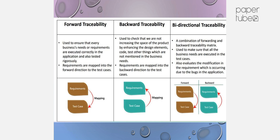Backward traceability is used to check that we are not increasing the scope of the product by enhancing design elements, code, tests, or other things not mentioned in the business needs. Here, requirements are mapped in the backward direction to the test case. Bidirectional traceability is the combination of forward and backward traceability.